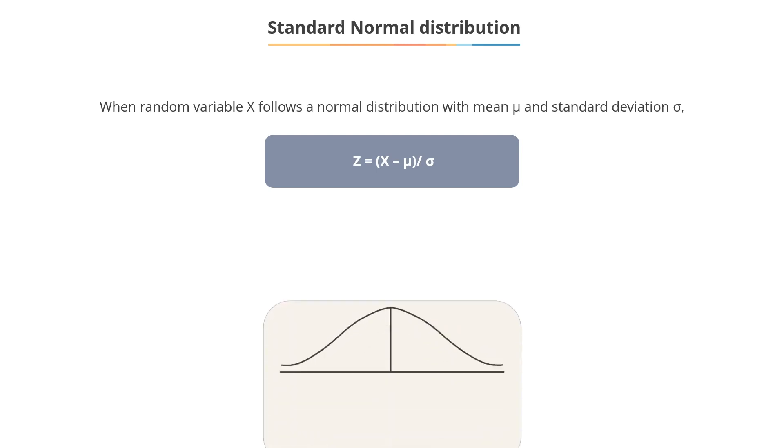Now let's understand standard normal distribution. When the random variable x follows a normal distribution with mean mu and standard deviation sigma, the random variable z equals x minus mu by sigma follows a normal distribution with mean 0, and standard deviation being 1.